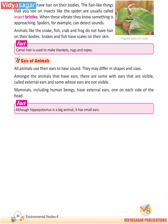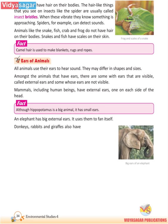Although the hippopotamus is a big animal, it has small ears. An elephant has big external ears and uses them to cool itself. Donkeys, rabbits and giraffes also have big ears.